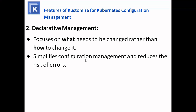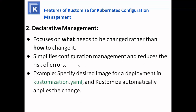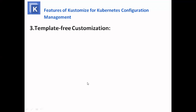Declarative management simplifies configuration management and reduces the risk of errors. For example, if you specify a desired image for a deployment in kustomization.yml, Kustomize automatically applies the change. We don't need to worry about how it's going to change — we just apply the change in the kustomization.yml.